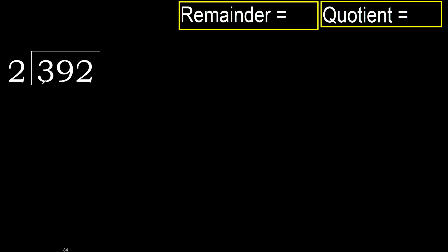392 divided by 2. 3 is not less, therefore with 3: 2 multiplied by which number is nearest to 3 but not greater? 2 multiplied by 2 is 4. 4 is greater, so multiply by 1. 2 multiplied by 1 is 2, which is not greater.